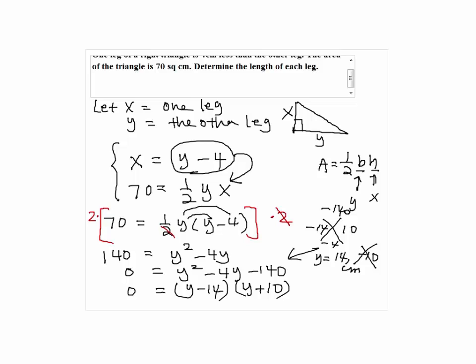So, to find x by substituting 14 into the original equation, x equals 14 minus 4, which is 10 centimeters.